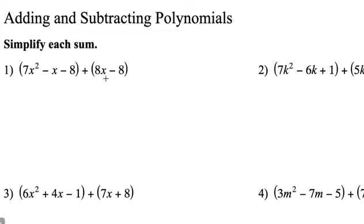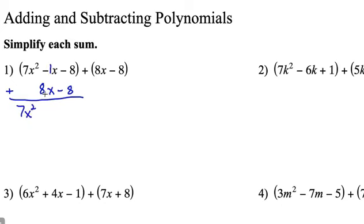I'm going to line up my like terms, putting the 8x underneath the negative 1x, and lining up the negative 8 underneath the negative 8. We are adding these two polynomials together. The 7x squared just tags along. Negative 1x plus 8x equals 7x, and negative 8 plus negative 8 equals negative 16, so the sum is 7x squared plus 7x minus 16.